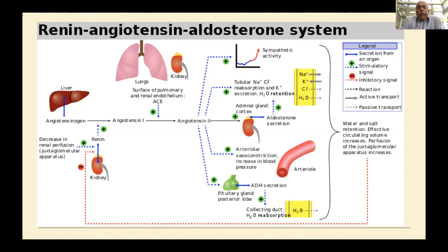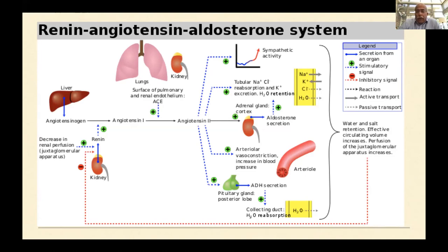Once angiotensin-2 is formed, it impacts sympathetic activity, tubular absorption of electrolytes and fluid, adrenal cortex aldosterone secretion, blood vessels, and the pituitary gland. The resulting water and salt retention increases effective circulating volume, affecting perfusion of capillaries and glomeruli in the kidneys. A negative feedback then reduces angiotensin-1 production — the normal regulatory mechanism.